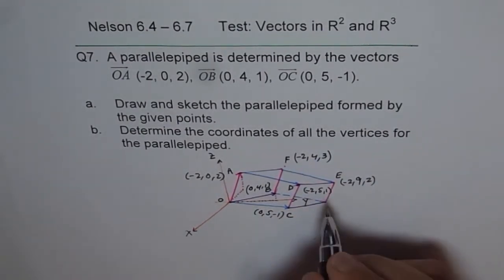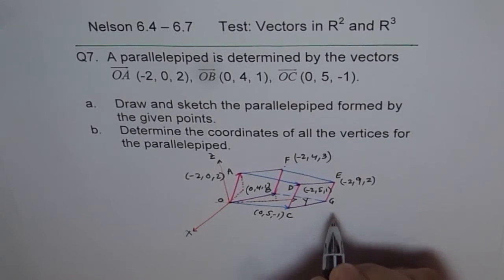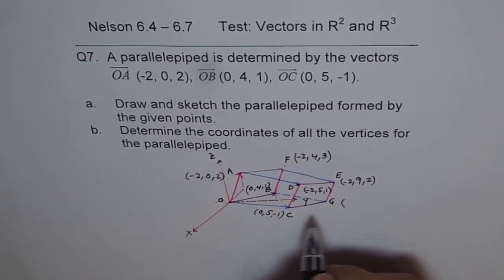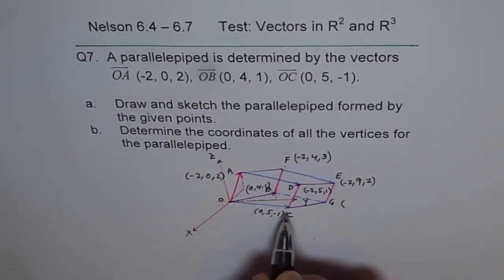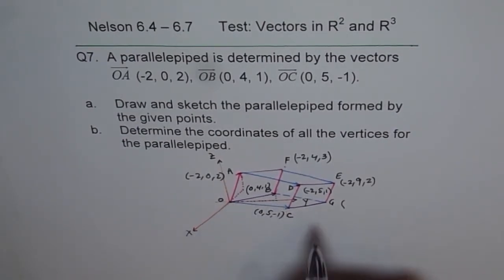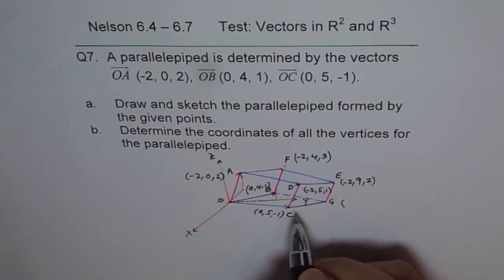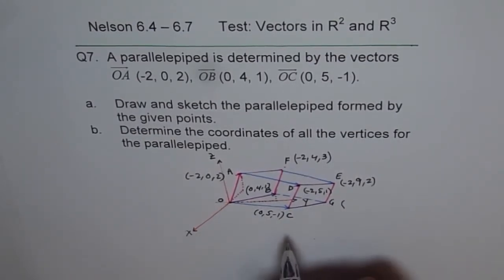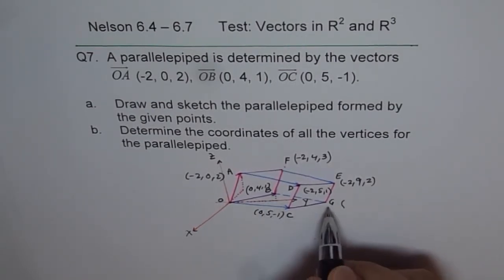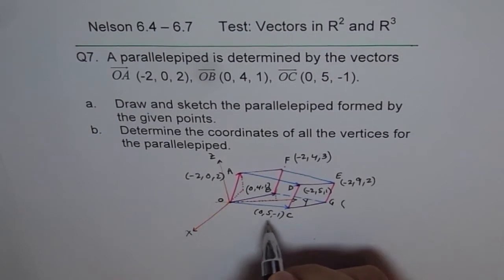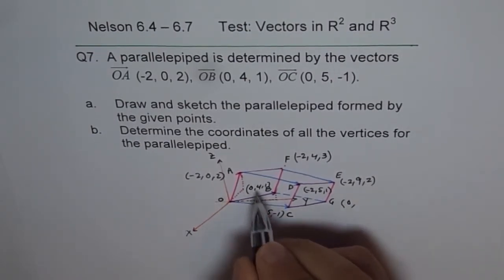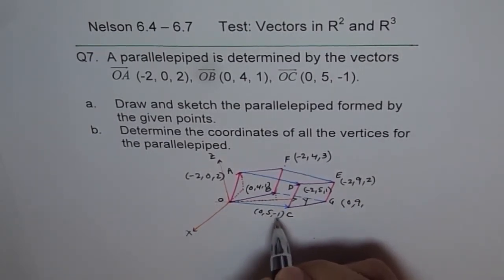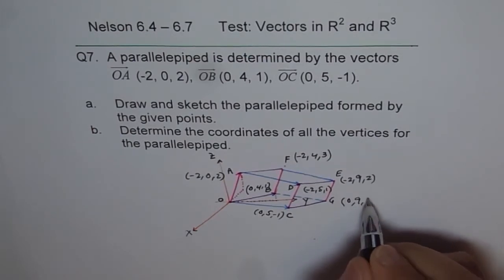Now, what are we left with? Let's say this point is G. To get G, it is OC plus OB. OC plus CG is point OG. We will add the position vectors for C and B to get G. 0, 5 plus 4 is 9, and -1 plus 1 is 0. So that is how we get all the vertices.